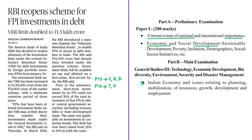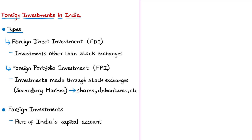The last discussion is based on the Voluntary Retention Route scheme of the Reserve Bank of India, which is a scheme related to foreign investments in India. There are two types of foreign investments in India: foreign direct investment (FDI) and foreign portfolio investment (FPI). Foreign portfolio investment refers to investments made through stock exchanges, that is through the secondary market, in financial instruments like shares and debentures. Investments made through modes other than the stock exchange are called foreign direct investment. Foreign investments are part of India's capital account.